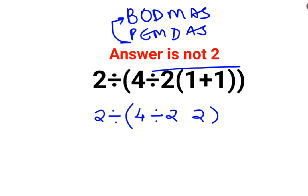Now, since we do not have any sign between this 2 and the bracket, that means it is multiplication. Now, at this point...